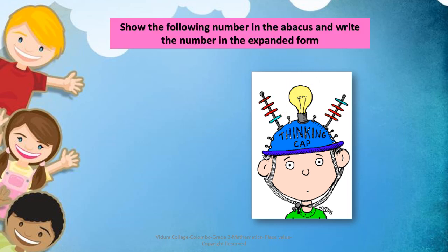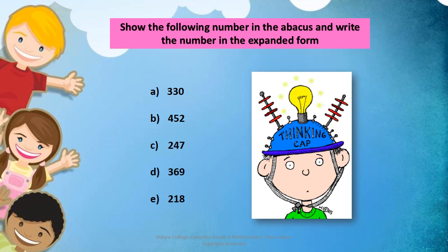Now it's time to wear your thinking cap and solve these sums. Show the following numbers on the abacus and write each number in expanded form: A) 330, B) 452, C) 247, D) 369, E) 218.